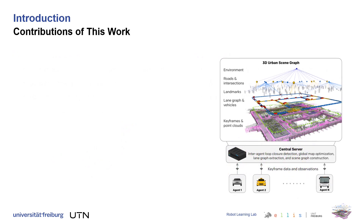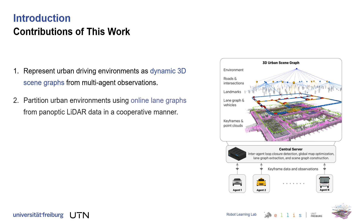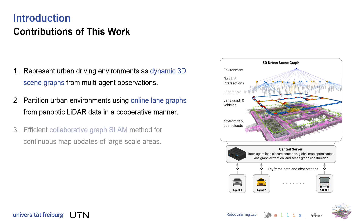We encode large urban environments as dynamic 3D scene graphs based on multi-agent observations. We further partition these environments into roads and intersections using a cooperative online lane graph from panoptic LiDAR data. And as a backbone of our work, we present an efficient collaborative graph SLAM method.